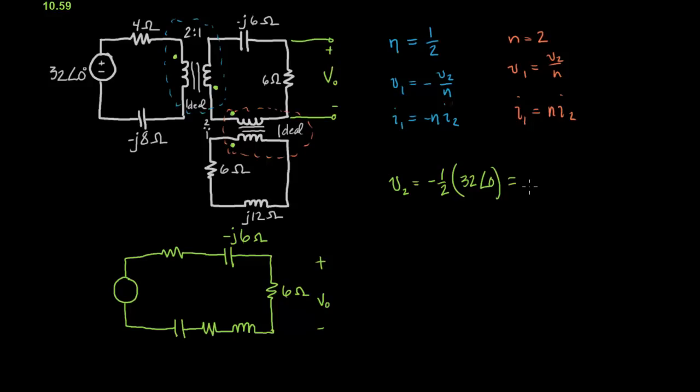Okay, and that equals minus 16 angle zero. So that tells us then that the polarity flips when we reflect this power source. Okay, so that's going to be 16 angle zero. So instead of putting the negative sign, I just flipped the battery.